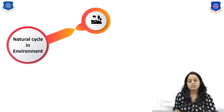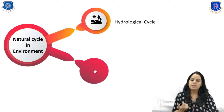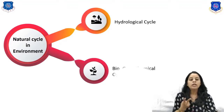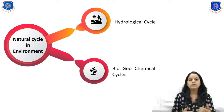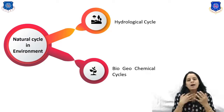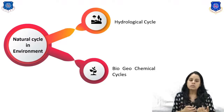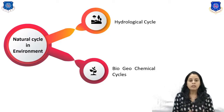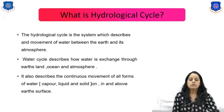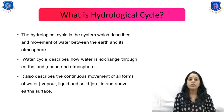Natural cycles in our environment are divided into two parts: the hydrological cycle and the biogeochemical cycle. The biogeochemical cycle is further classified into four cycles: the nitrogen cycle, carbon cycle, sulfur cycle, and phosphorus cycle. In this lecture, we will discuss only the hydrological cycle.